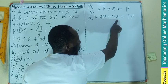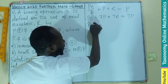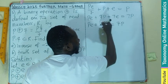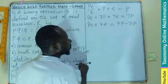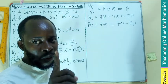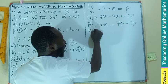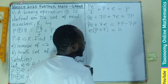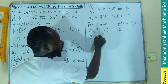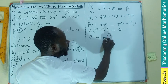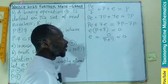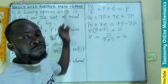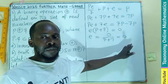e appears in two places, so we factorize: e(p + 7) + 7p = 7p. Then 7p cancels on both sides, leaving e(p + 7) = 0. Dividing both sides by (p + 7) gives e = 0. So the identity element of this operation is zero.